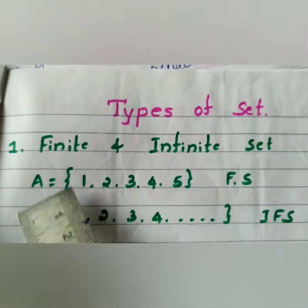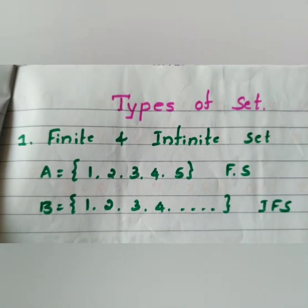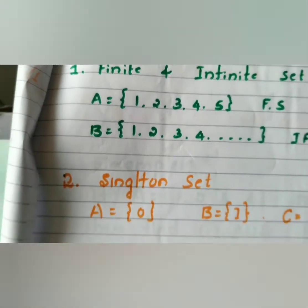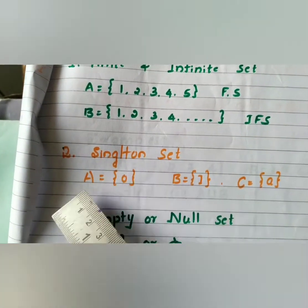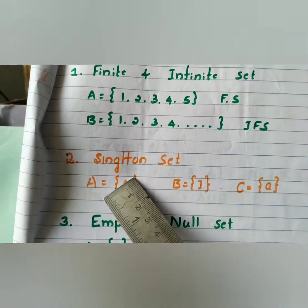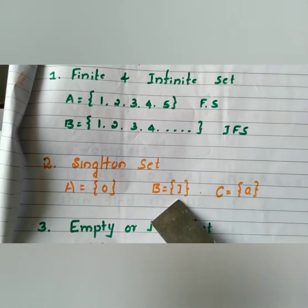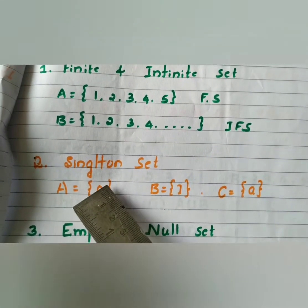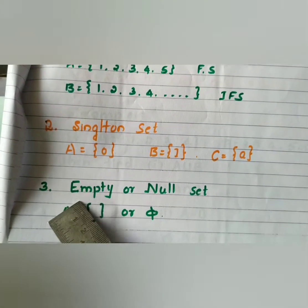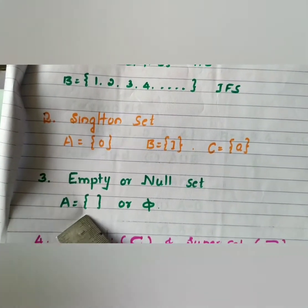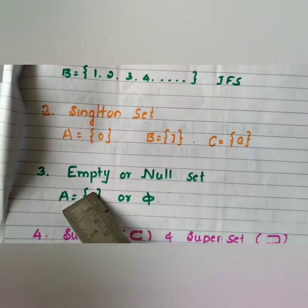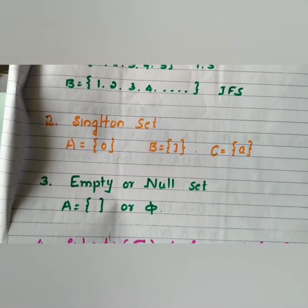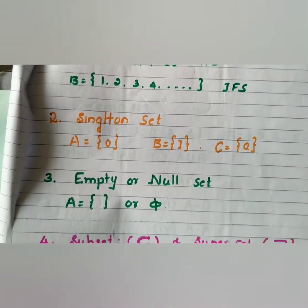A singleton set contains only one element. For example, A = {0}, B = {1}, C = {a} are singleton sets. The empty set is a set with no elements, denoted either by empty brace brackets {} or by the symbol φ. A set consisting of no elements is called the empty set.